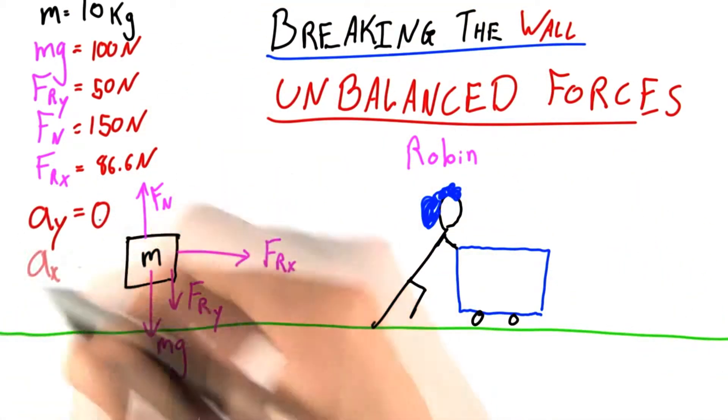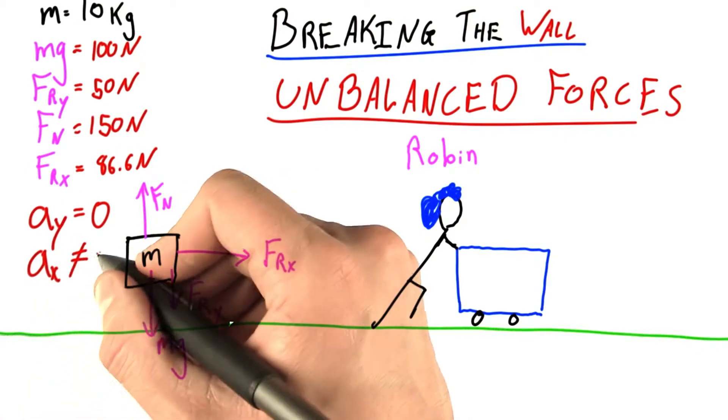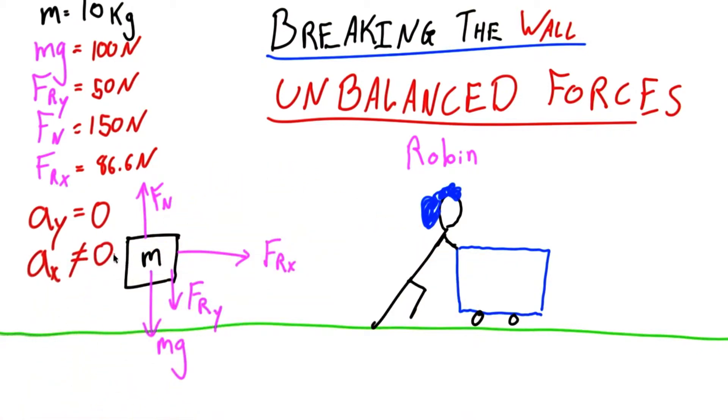Ay will equal 0. Ax, on the other hand, will not equal 0. It will equal something much more interesting. And let's calculate.